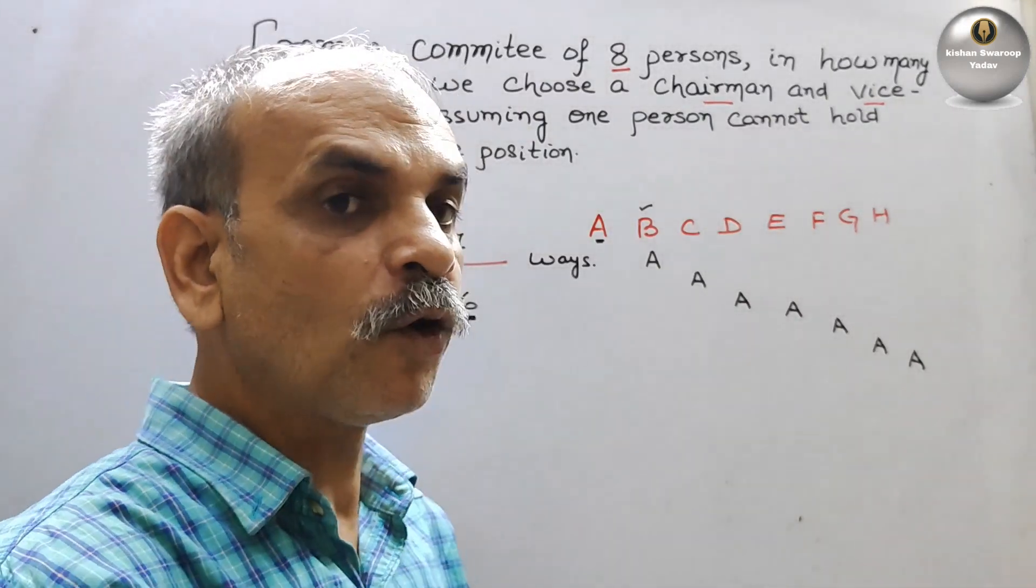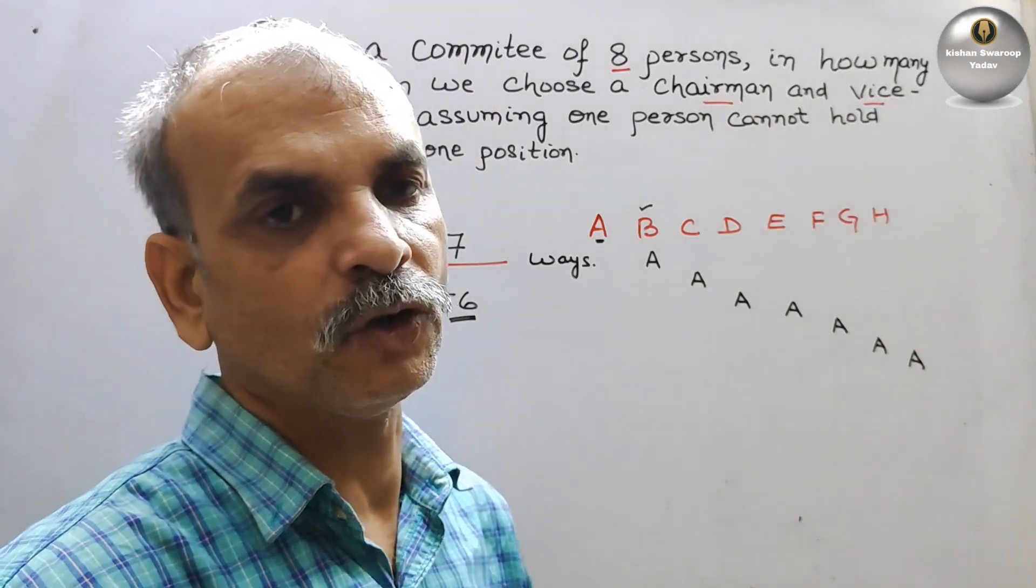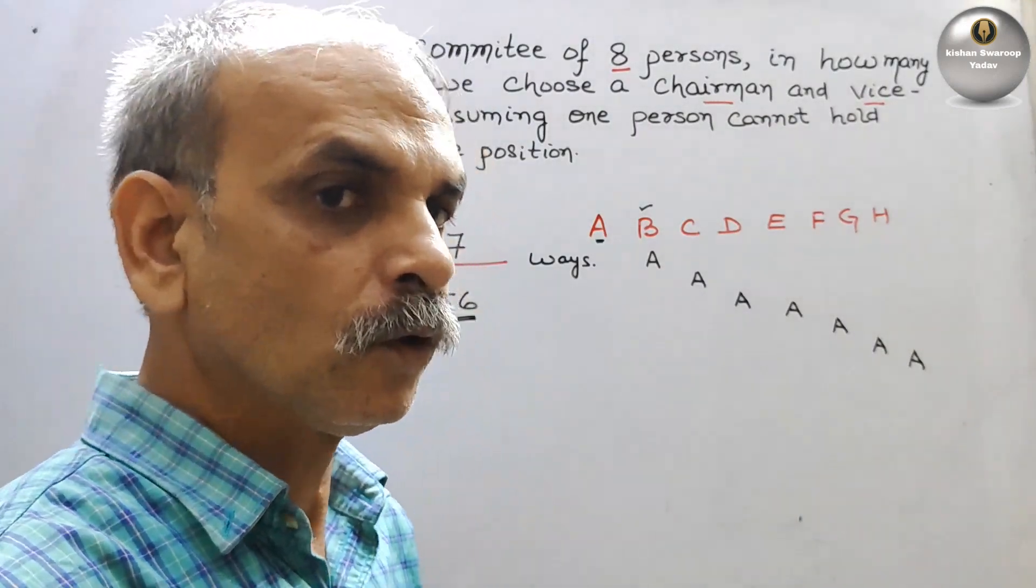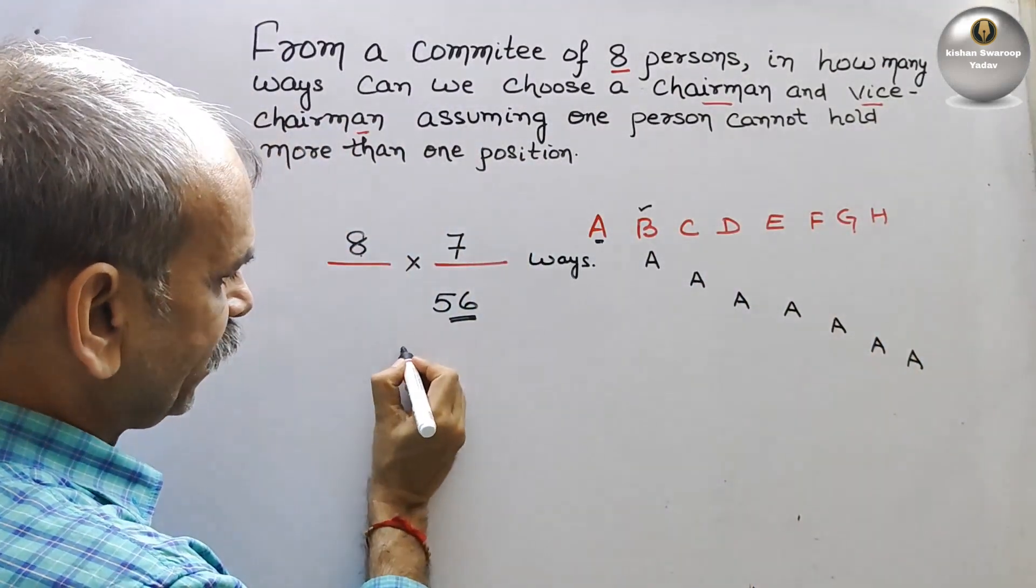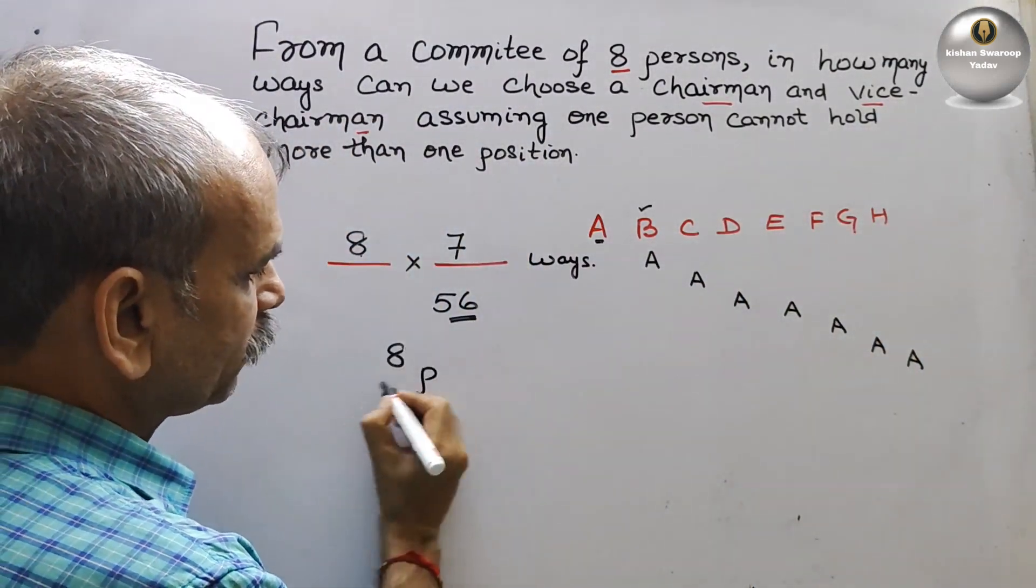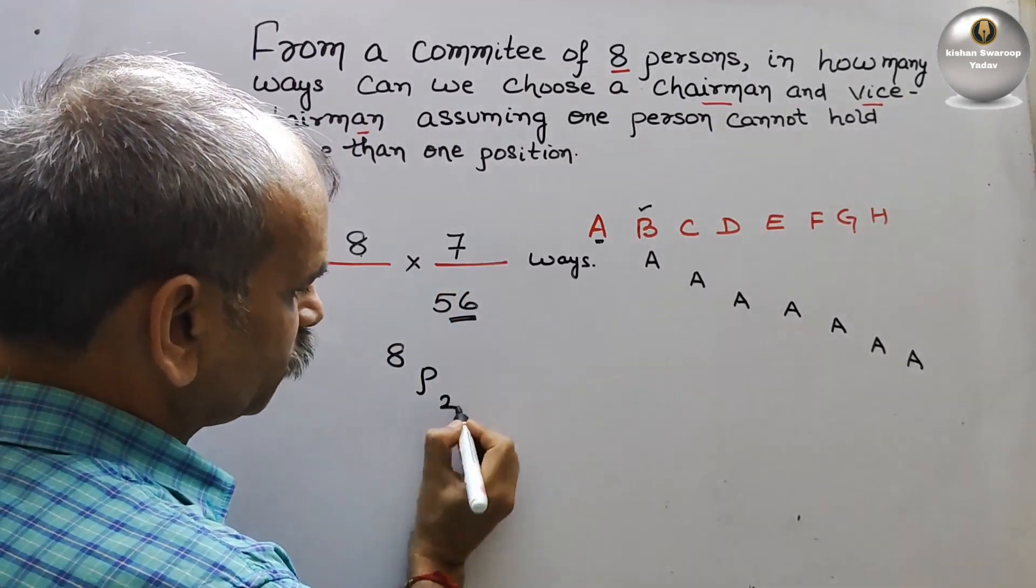Now we will go for permutation. We should get 56 only. How? So that is nothing but there are eight persons, we will write eight. Permutation by, and there are two blank seats. So we will write two.